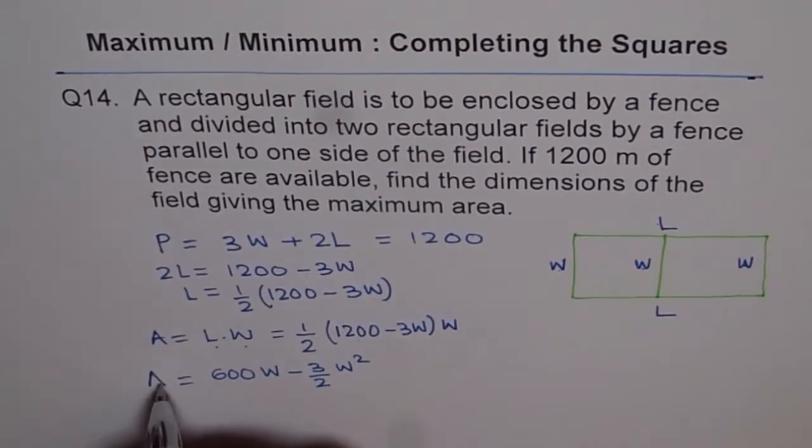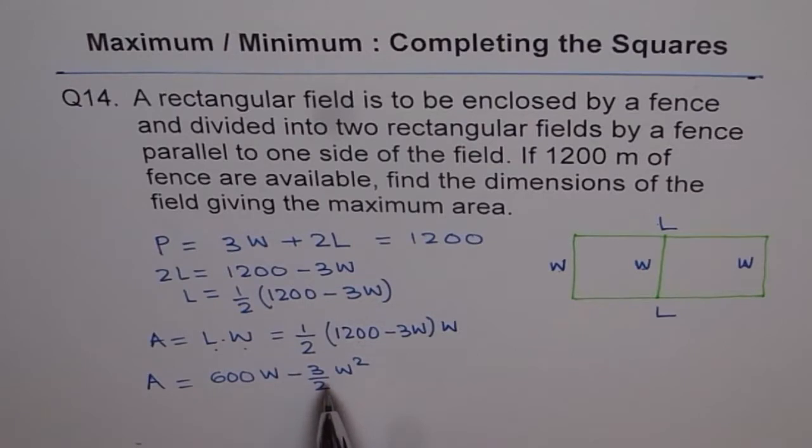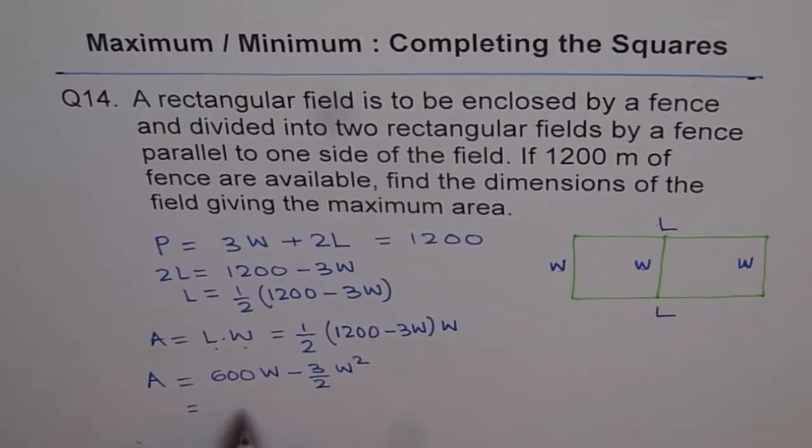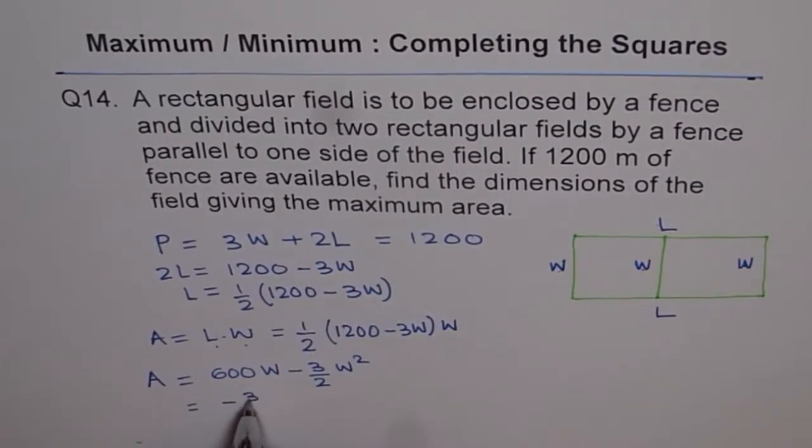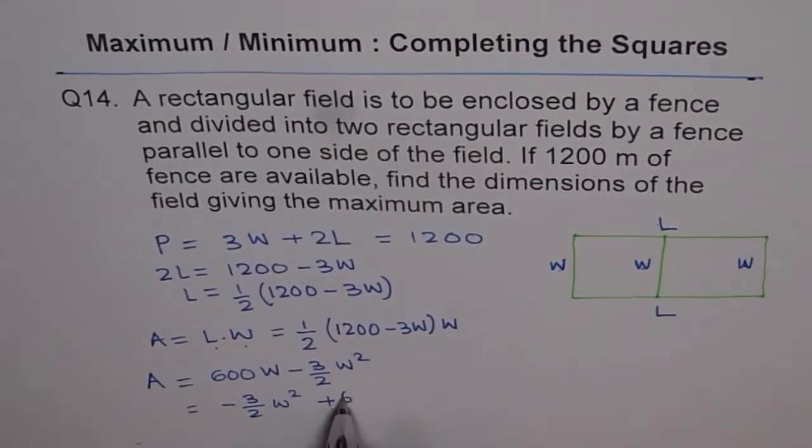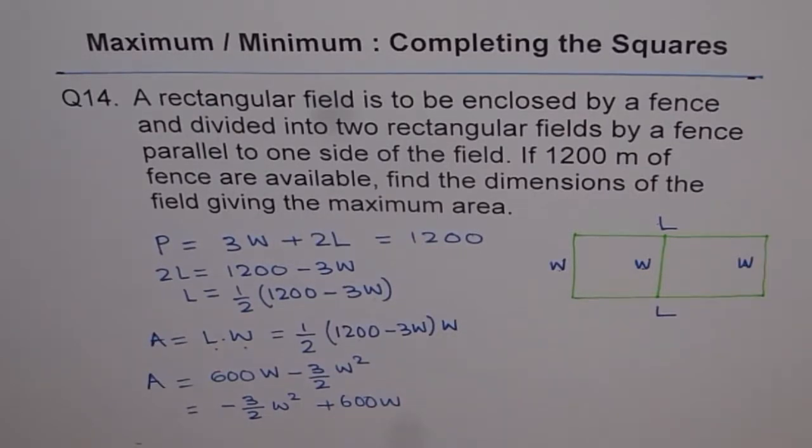So that becomes our area. Now, it is good practice to always write any polynomial or quadratic equation with highest degree first and then decreasing order. So I'll prefer to write this as minus 3 over 2 W square plus 600W, right? So we get our quadratic equation.